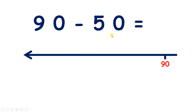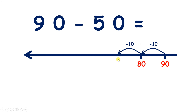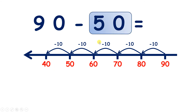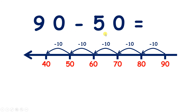Now we have 90 take away 50 on a number line. So if we're subtracting 50, we need to count back in tens how many times? Well, 50 is 5 tens, so we need to go back 5 tens. So if we go back 10, we get to 80. Go back 2 tens and we get to 70. Back 3 tens and we have 60. 4 tens and we have 50. And now back 5 tens gives us 40. So we've subtracted 50, because we've subtracted 10 five times, and 5 tens make 50. So 90 minus 50 is 40.